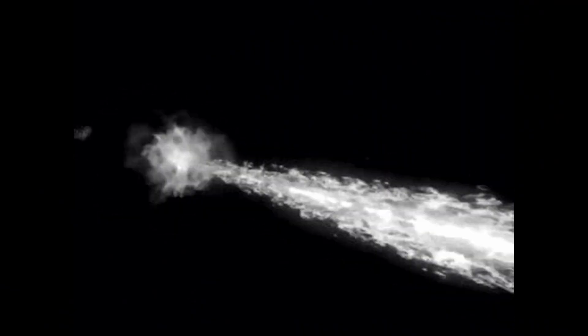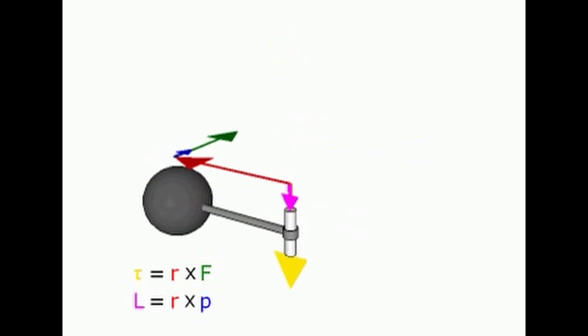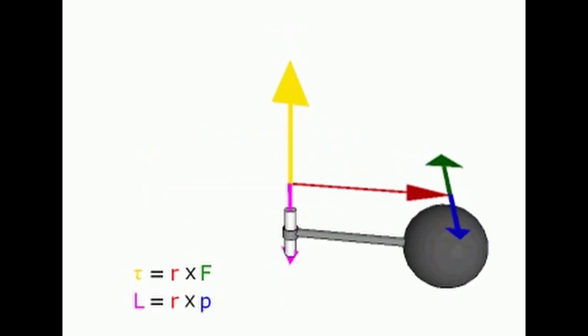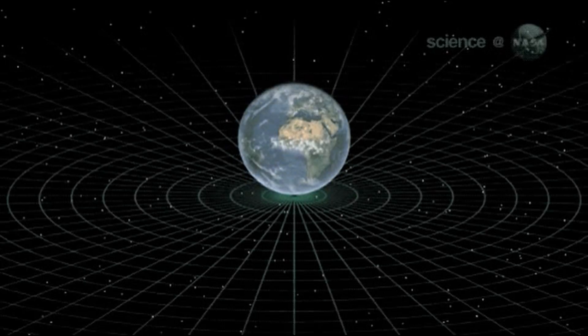For example, the dimension of speed is L/T, meaning that speed is measured by length over time. The dimension of force is ML/T², meaning that force is measured by mass times length over time squared.